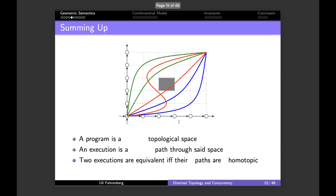Summing up: we have a geometric view on programs and executions where programs are topological spaces and executions are paths through those spaces. Two executions are equivalent if their paths are homotopic. The two blue executions give the same value, the two green executions give the same value — the two blue paths are homotopic, the two green paths are homotopic, but there is no homotopy between blue and green.